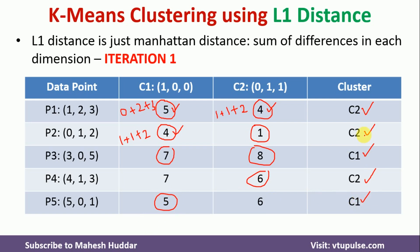Once we have the cluster assignments, we calculate the new centroids. For C1, the data points are P3 and P5. Dimension by dimension: (3+5)/2 = 4, (0+0)/2 = 0, (5+1)/2 = 3, giving C1 = (4, 0, 3). For C2, the data points are P1, P2, and P4: (1+0+4)/3 = 1.66, (2+1+1)/3 = 1.33, and (3+2+3)/3 = 2.66, giving C2 = (1.66, 1.33, 2.66).